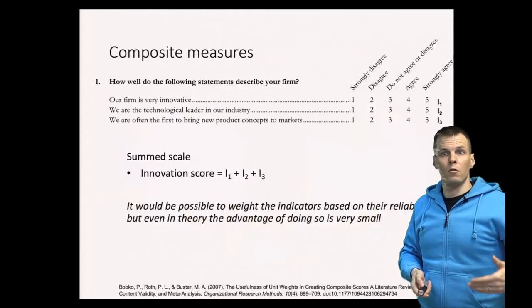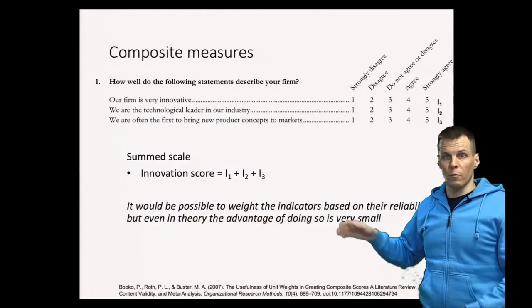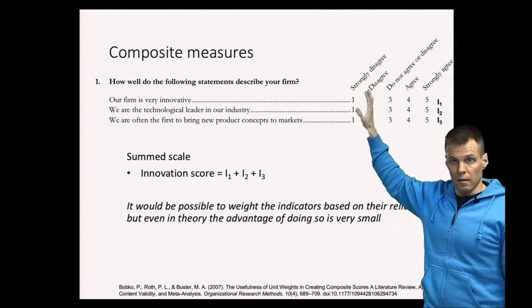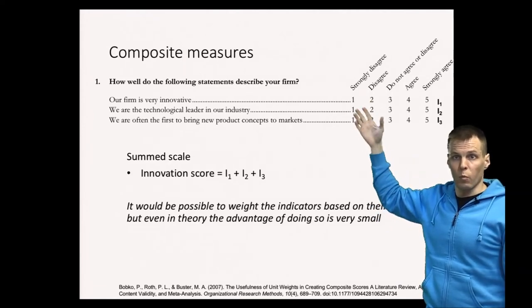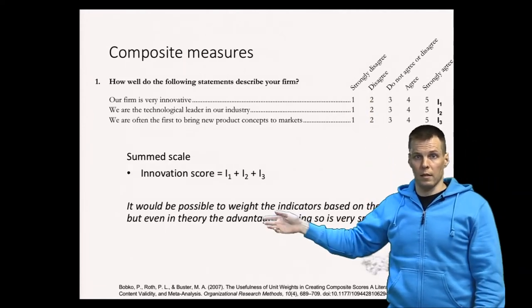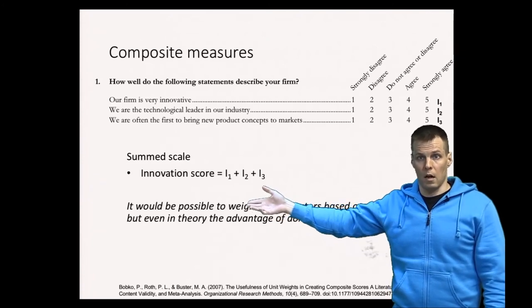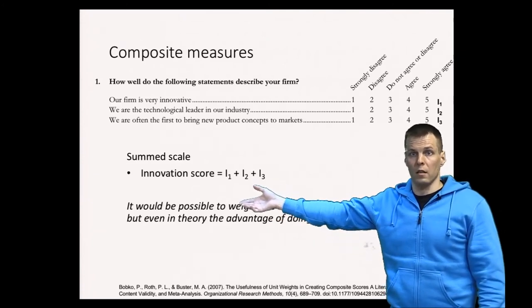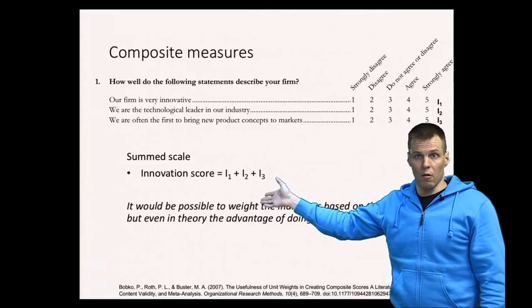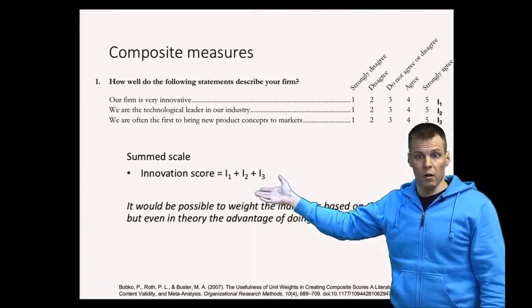So instead of using these values from this innovativeness scale as separate indicators or just picking one that is most reliable, we take a sum, and then the sum is our innovation score or scale score, and that's going to be our measure in our regression analysis.